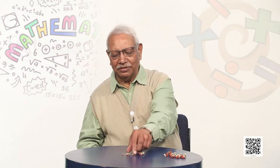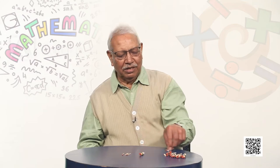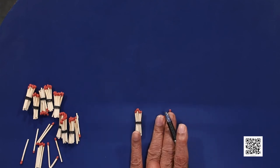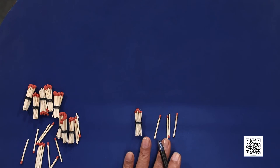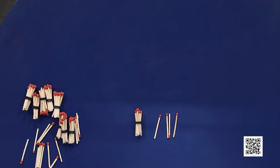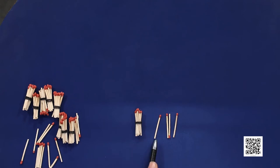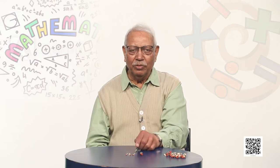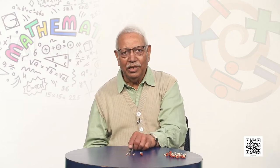Suppose I remove some sticks and now ask again how many sticks are there. You will look at individual sticks — 1, 2, 3, 4 — and there is a bundle of 10 sticks also. So we will count: 10, 11, 12, 13, 14. In answer to the question how many, there are 14 sticks.